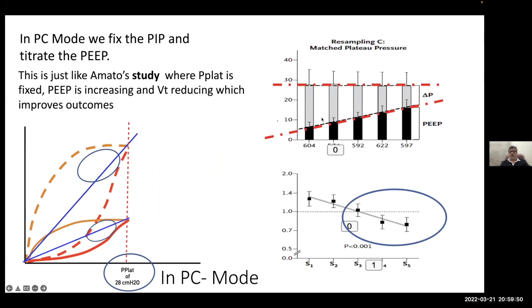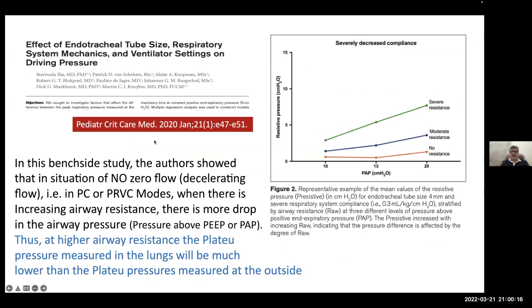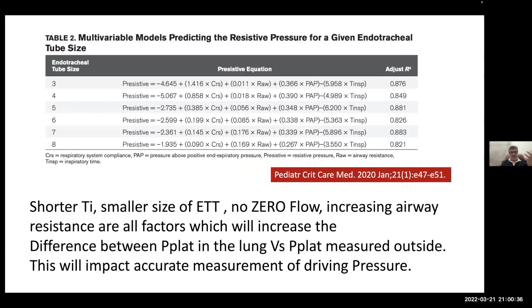Regarding the impact of airway resistance: a study by Dr. Martin Nabar found that with increased airway resistance, there is a drop in plateau pressure reaching the alveoli compared to the measured plateau pressure outside. With a shorter inspiratory time where flow does not reach the baseline, or with a smaller endotracheal tube, or increased airway resistance, all these factors reduce the plateau pressure delivered to the alveolar level.